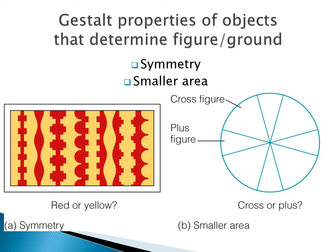In B, is it the X or the plus figure that seems more like the figure? The idea is that it should be the plus because that's the smaller area — but that's one that almost has never worked. I have a few people saying the smaller area, but a lot of people saying the X, the larger area. I keep looking for a better example but I haven't replaced my bad example yet.